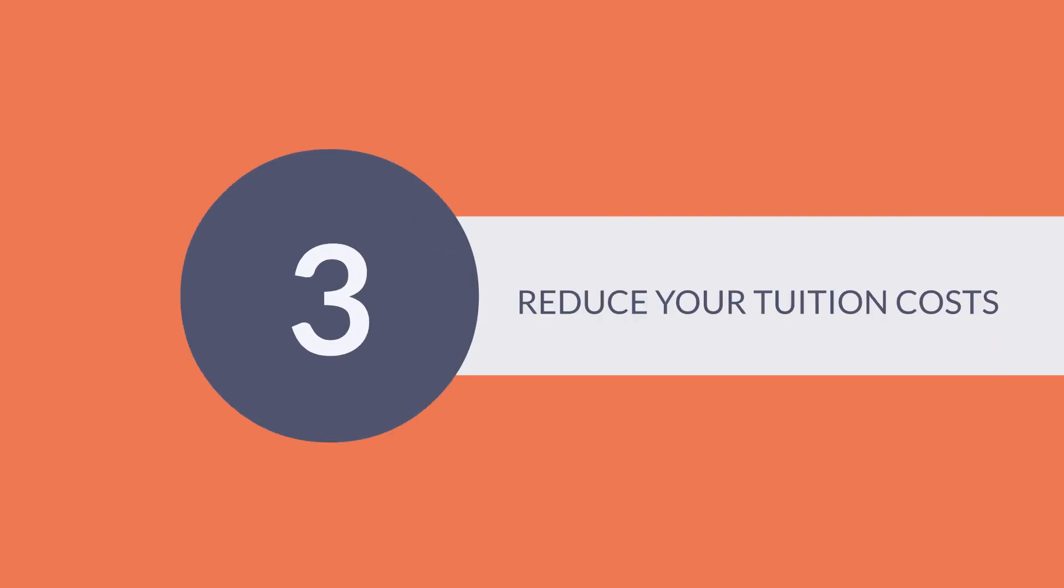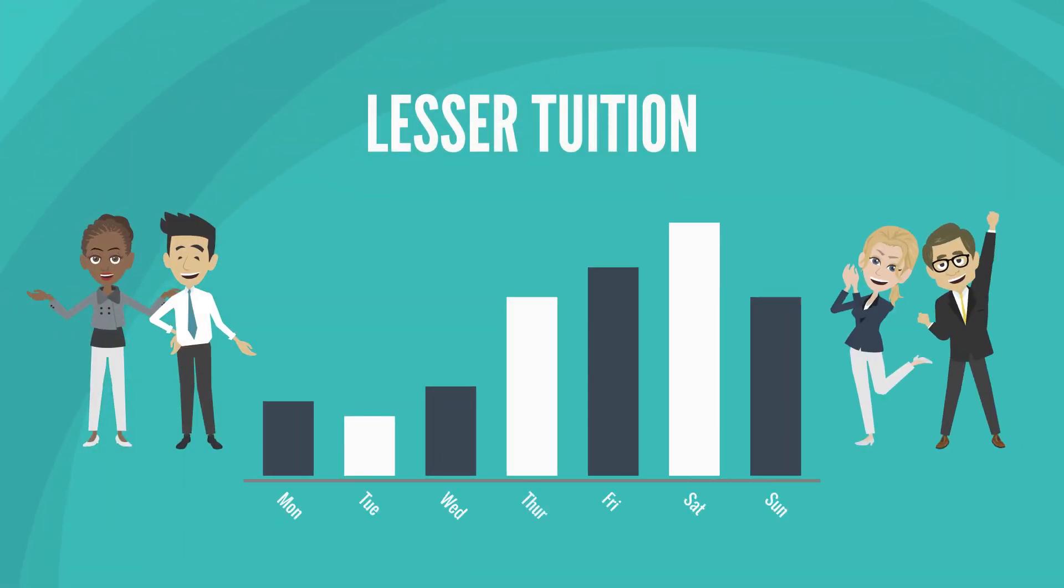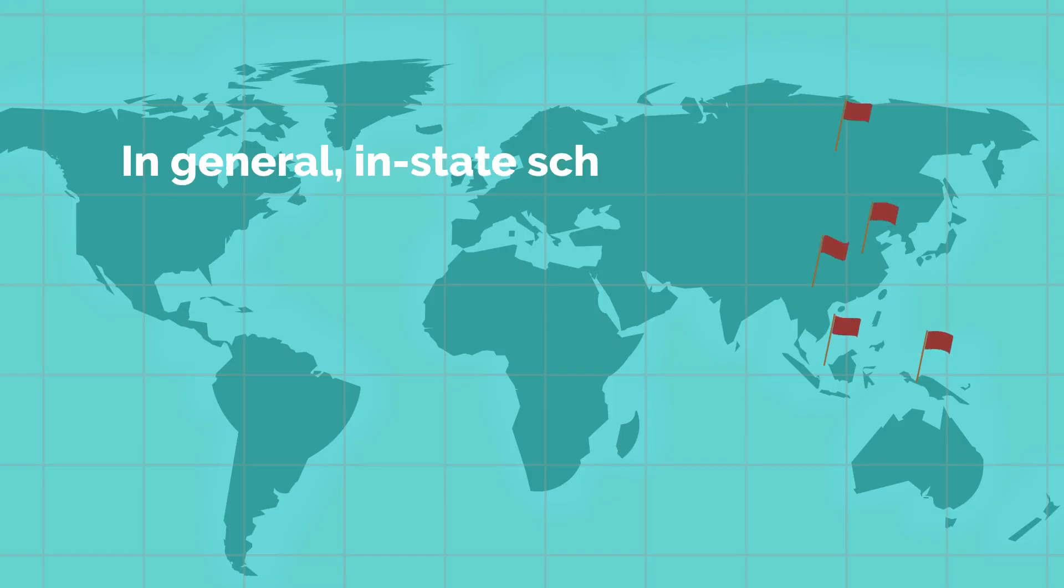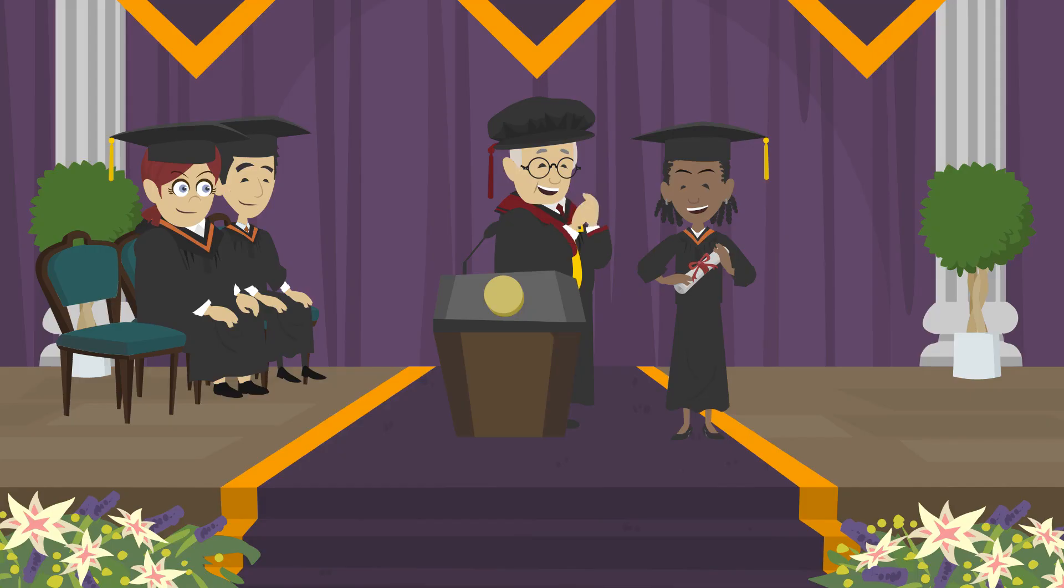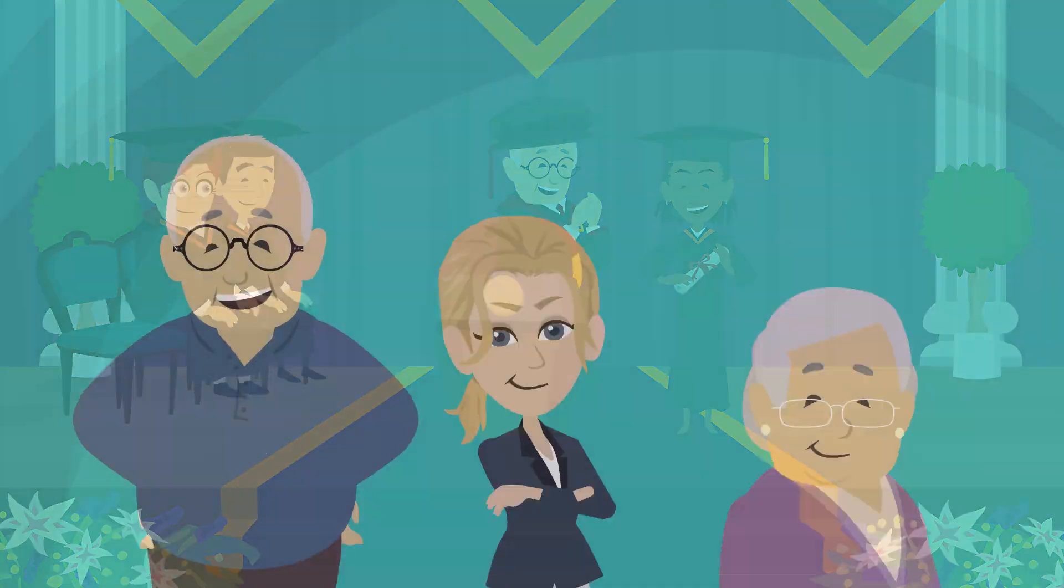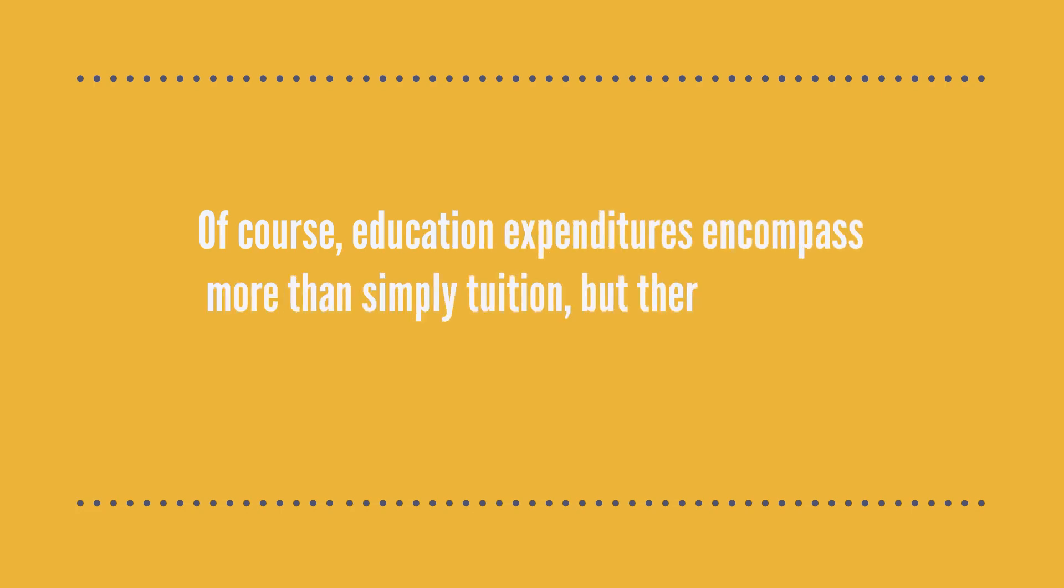3. Reduce Your Tuition Costs. Consider attending a college with lesser tuition. In general, in-state schools are less expensive than out-of-state or private schools. Some colleges provide discounts based on your proximity to the campus. You may be eligible for discounts if you are a legacy student, because one or both of your parents attended the institution. Of course, education expenditures encompass more than simply tuition, but there are other ways to save.